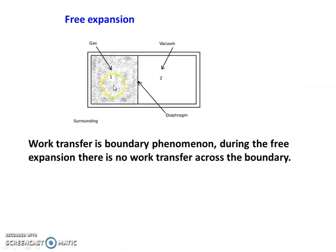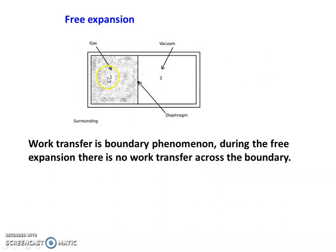The next form is free expansion. There is a container with two compartments: the first filled with gas and the second is vacuum, separated by a diaphragm. Work transfer is a boundary phenomenon. During free expansion, when the diaphragm is removed, the gas expands to occupy the entire volume, but nothing crosses the system boundary. Therefore, free expansion involves no work transfer — W = 0 in free expansion.